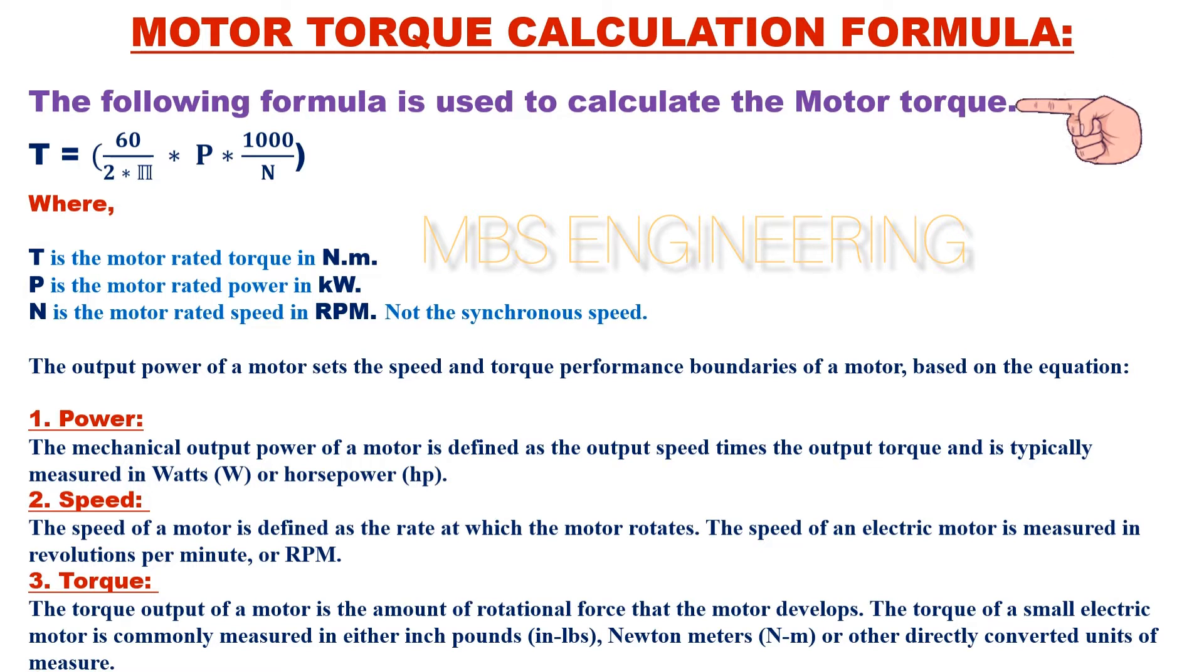First, we will cover the formula used to calculate the motor torque, which is as follows. Motor torque T equals 60 times P times 1000, and the obtained value is divided by 2 pi N.